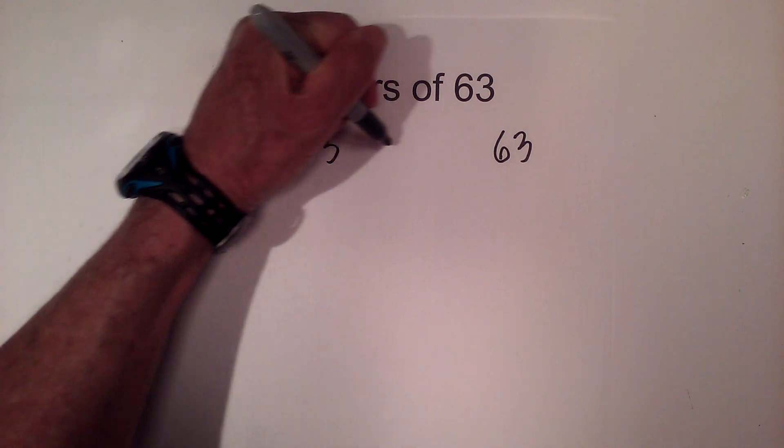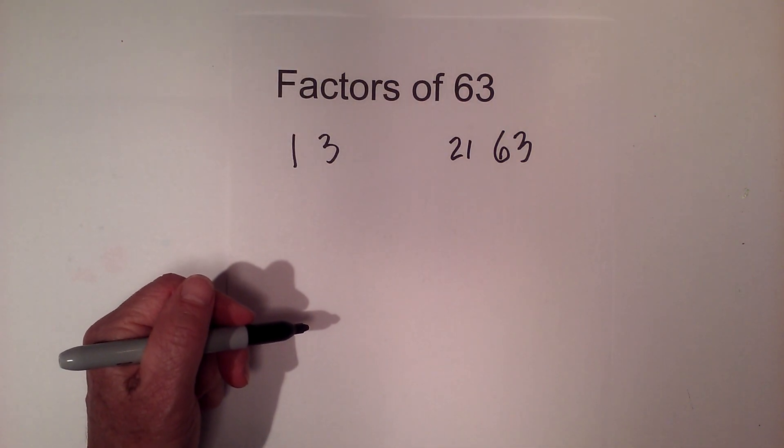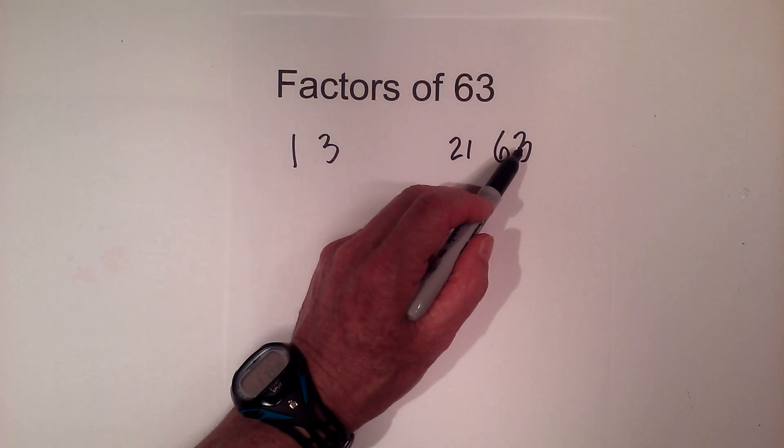3 goes into 63 21 times. 4 does not go into 63. 5 does not because it doesn't end in 5 or 0.